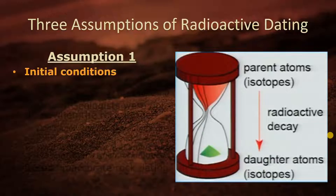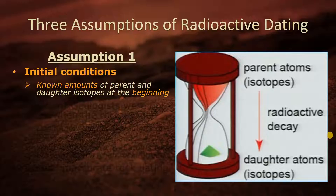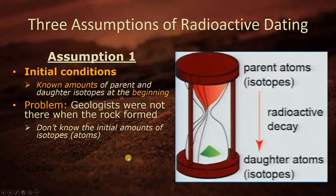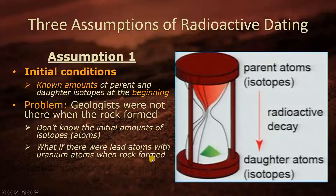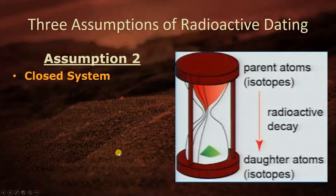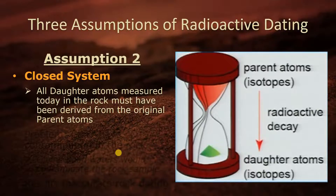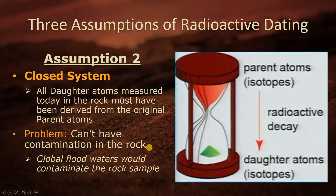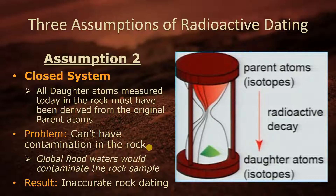The three assumptions of radioactive dating. Assumption one: initial conditions — the known amounts of parent and daughter isotopes at the beginning of the decay mechanism. The problem is geologists were not there when the rock formed, and you don't know the initial amounts of isotopes. What if there were already lead atoms when the rock formed, when you're going from uranium to lead? The result: inaccurate rock dating. Assumption two: it's assumed to be a closed system. All daughter atoms measured today must have been derived from the original parent atoms. But contamination, like global floodwaters, would contaminate the rock sample, resulting in inaccurate rock dating.